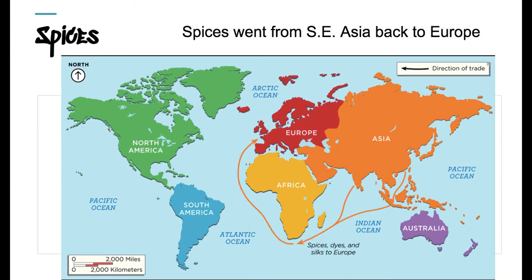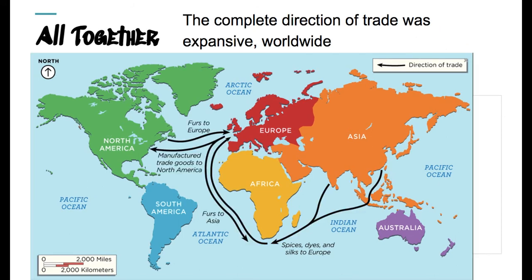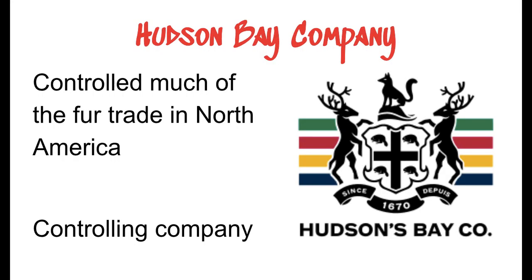From Asia, spices would make it back to Europe — sometimes silks and dyes as well, but primarily spices. Here's the entire fur trade — you can see it's a worldwide trade, not just one from Minnesota to Europe. This is a trade that expands to the entirety of the world, tying everybody together. One estimate says one in five people were directly employed by the fur trade at its height.